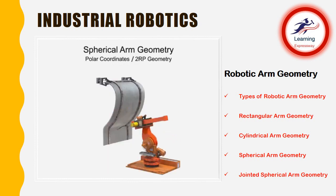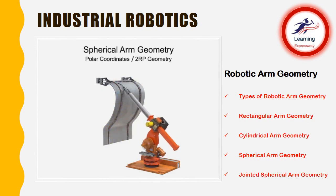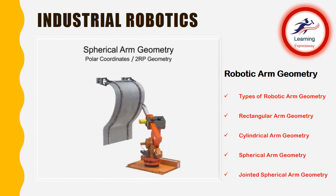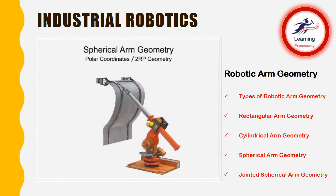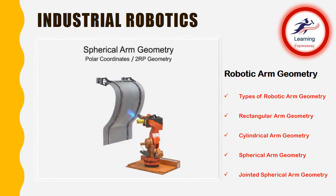Spherical arm geometry robots typically have a very long reach and have proven their performance in industrial applications. However, their high cost, large use of floor space, and lack of flexibility compared to jointed spherical arm robots make it hard to justify in most industrial applications.